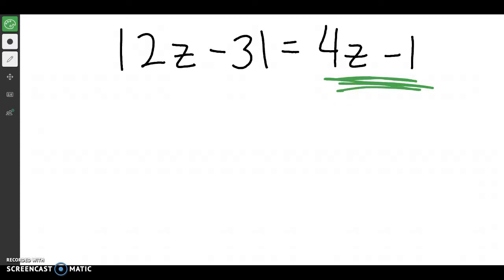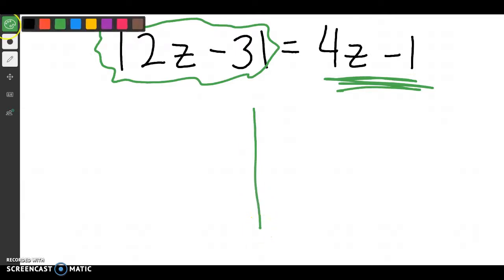So just like yesterday, our first goal is to get this absolute value by itself, and we've already done that. And after we get the absolute value by itself, we're going to split into two different equations. One is going to be my positive side, and one's going to be my negative side.